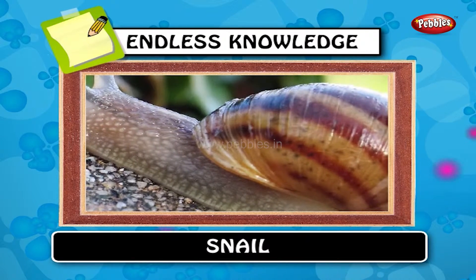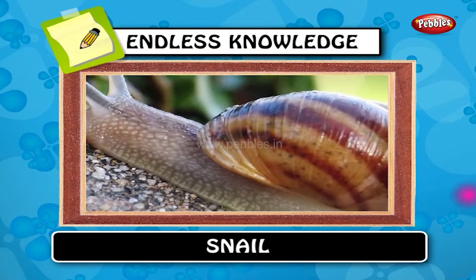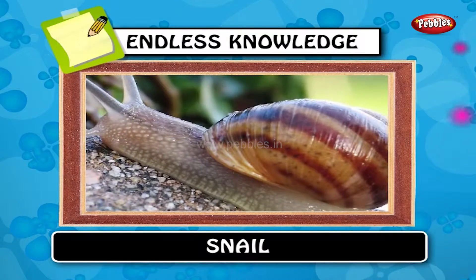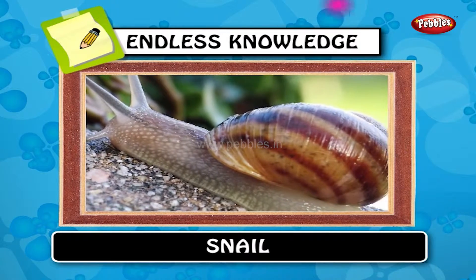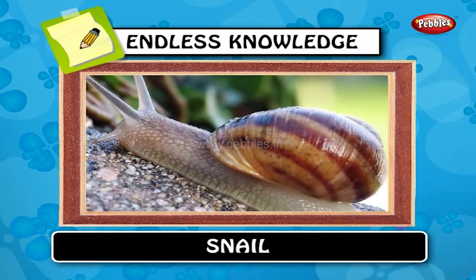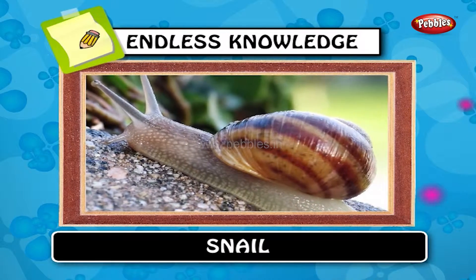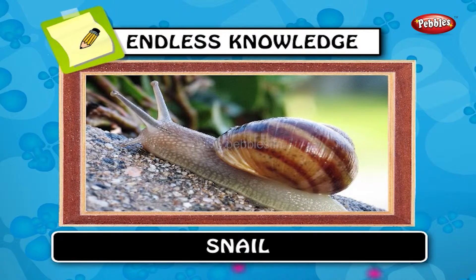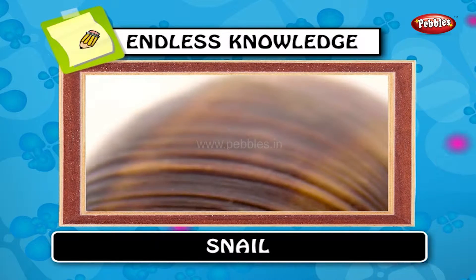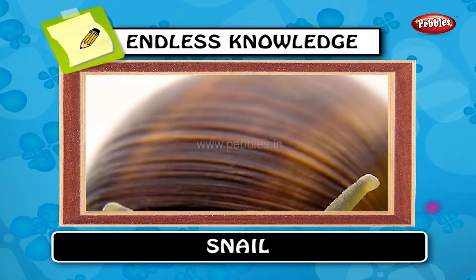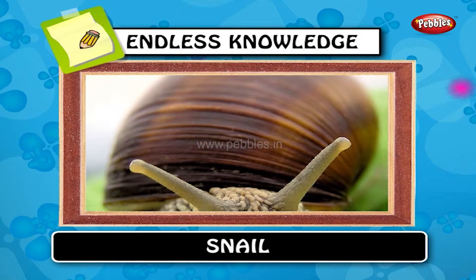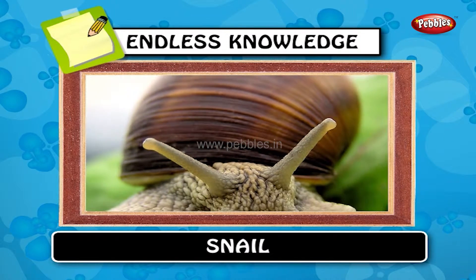Snail. Snails that have a broadly conical shell that is not coiled or appears not to be coiled are often known as limpets. Snails can be found in a wide range of environments, from ditches to deserts.